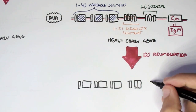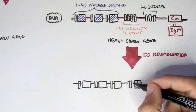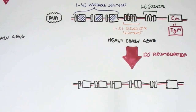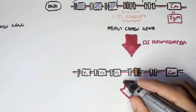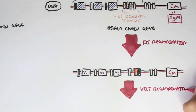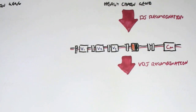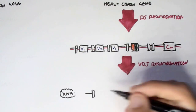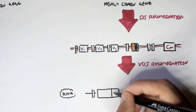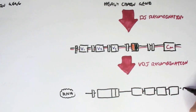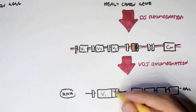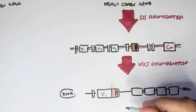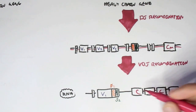The first event in heavy chain gene recombination is DJ recombination, where one diversity segment and one joining segment bind together. Following DJ recombination, VDJ recombination occurs, where the previously bound D and J segments bind to one of the variable segments.